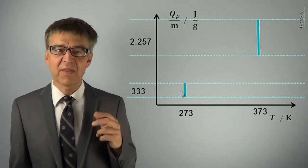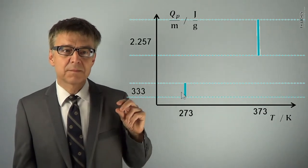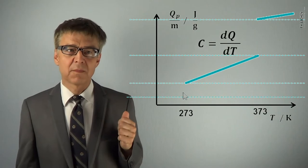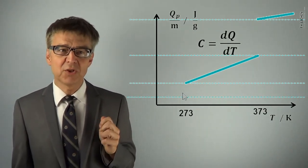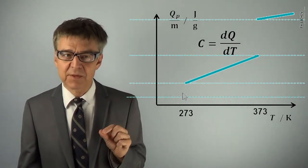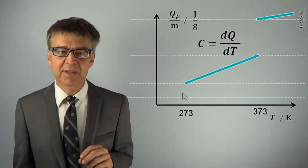Sensitive heat, on the other hand, is always associated with temperature change. The heat required for a certain temperature change, or more precisely formulated, the slope of this graph is called heat capacity, capital C.